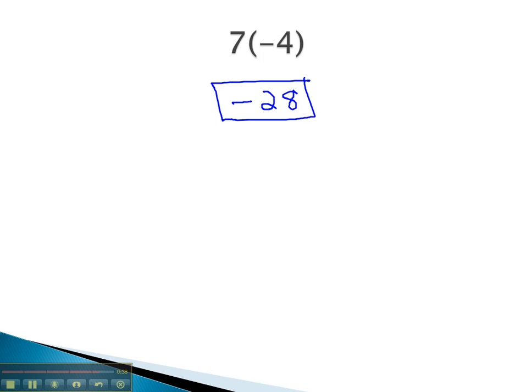The first example we did was 7 times negative 4. A common error is students will subtract 7 minus 4 to get 3. But I want to notice that 7 is right next to the parenthesis. Remember, when we're right next to parenthesis with nothing in between, we assume the operation is multiplication. So be very careful of that error.